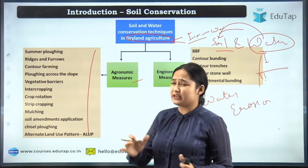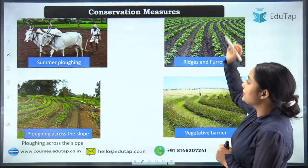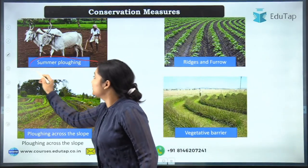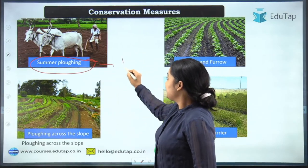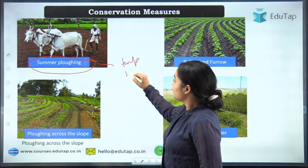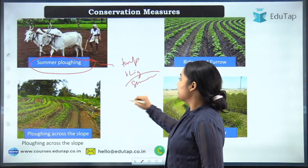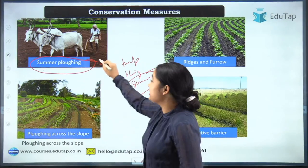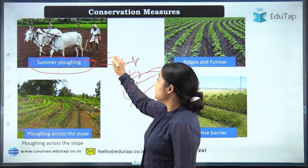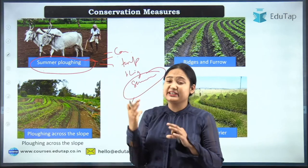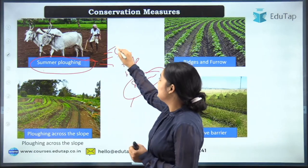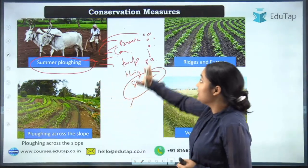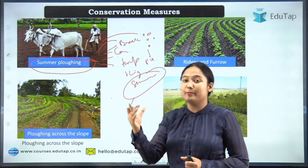Starting with the basic agronomic conservation measures — the first is summer plowing. When temperature is high in summer, you do plowing. How is this a conservation measure? The compaction of soil — the rigid clods — will break. That is why summer plowing is an agronomic conservation measure that you can easily apply on your farm.